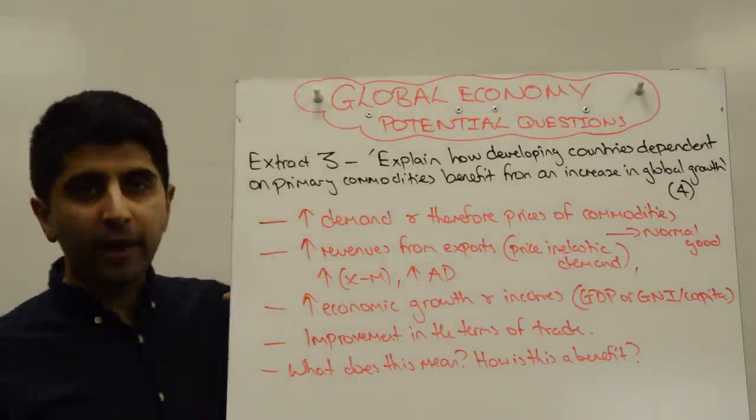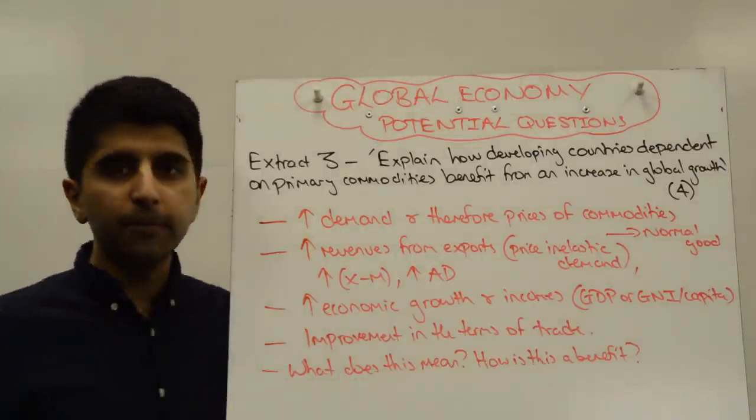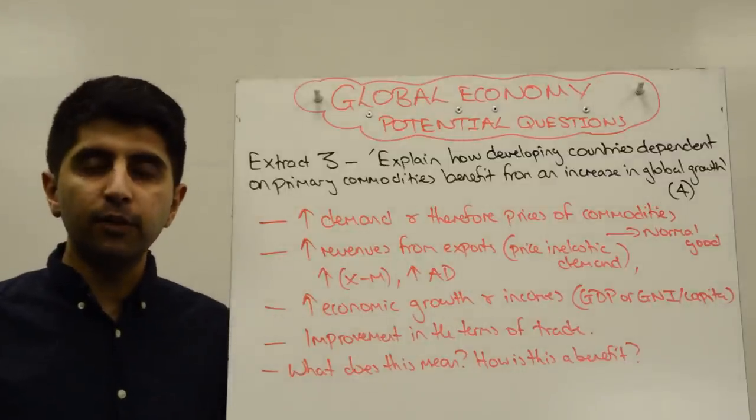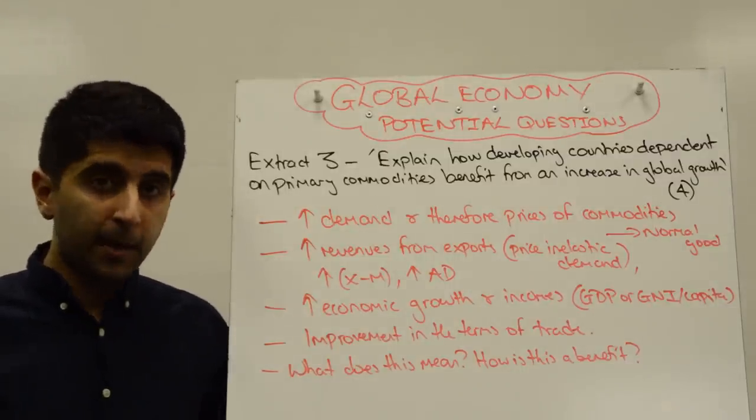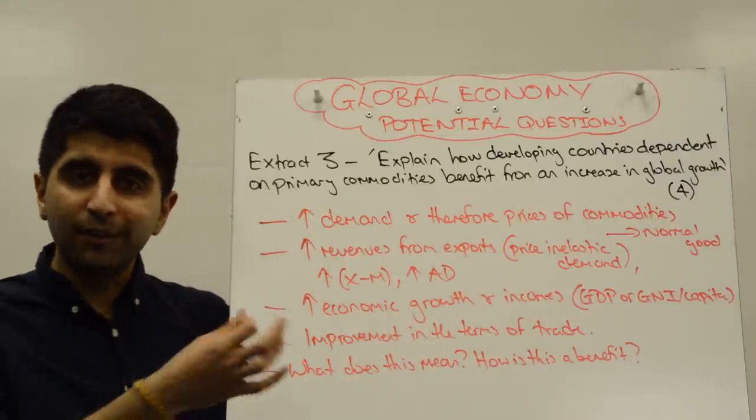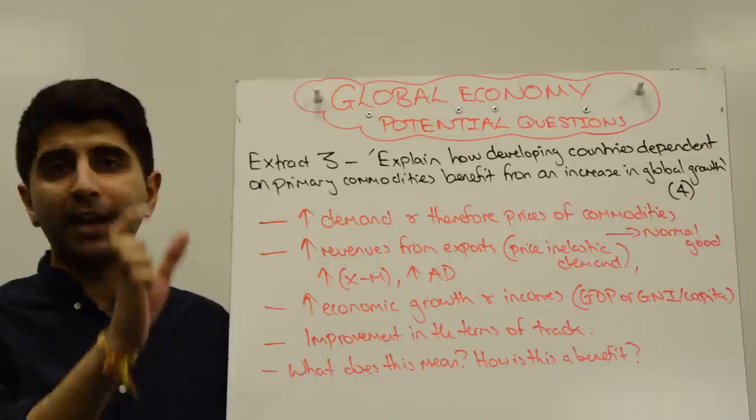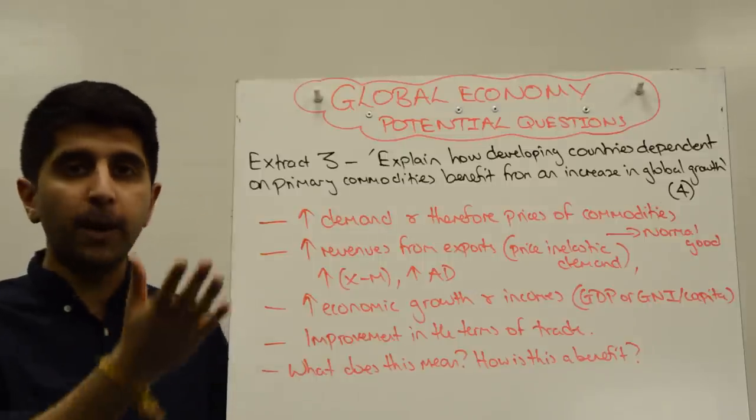You'll talk about how that will boost economic growth in developing nations and generate higher incomes to the individuals in these countries, leading to higher GDP or GNI per capita. You would say that at the same time, an increase in primary commodity prices as an export for these countries will improve a developing country's terms of trade as export prices at the top of the equation go up.